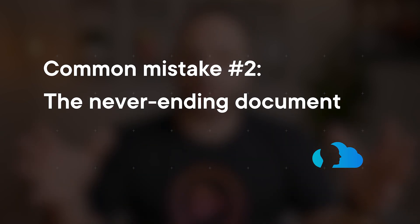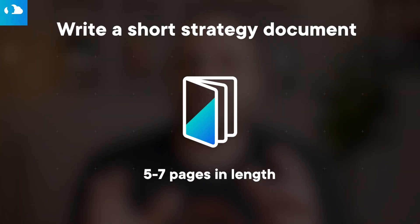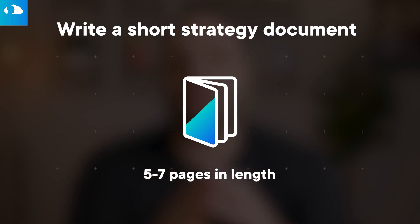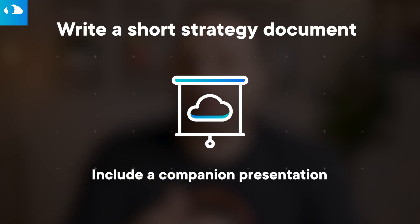Common mistake number two: writing a very long document. Typically when documents are very long, that's because you've written an IT-specific document. But even if you wrote a very long business-specific document, remember your executives and business leaders — their attention span is very short. If you write a 20-page document, I can guarantee you no one's going to read it. Make sure your cloud strategy is between five to seven pages, and always has a companion PowerPoint presentation that you can present to executives anytime.